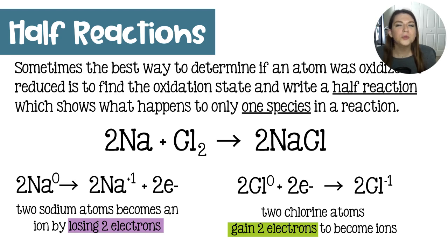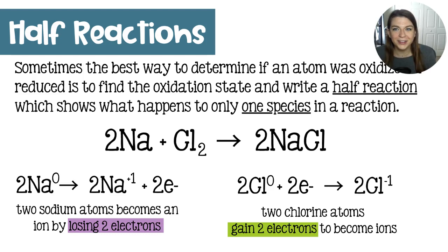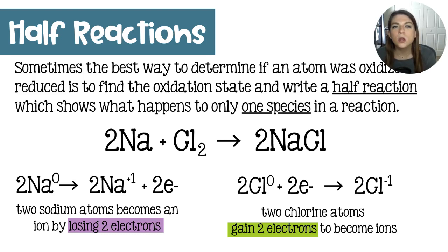Sometimes we know the reaction, so we know what's happening. Like here, we have sodium and chlorine making sodium chloride. We know that sodium is losing electrons and chlorine is gaining them every time. We know who's oxidized and who is reduced, but sometimes our chemical reaction is more intricate and more involved.